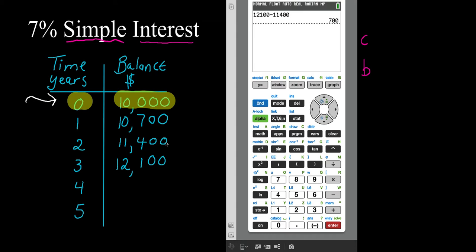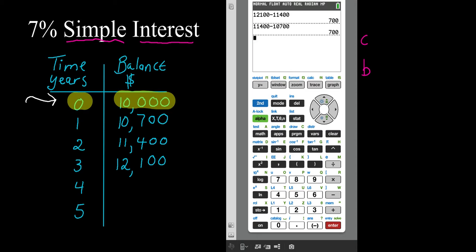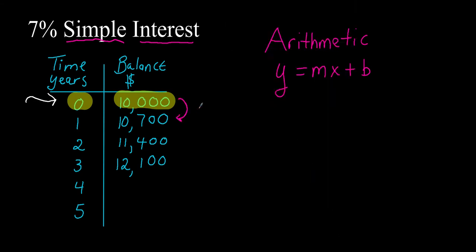I'm going to take eleven thousand four hundred minus the balance right before it, which is ten thousand seven hundred — and I get the same thing, so we have a common difference. You can also take ten thousand seven hundred minus ten thousand and you'll get seven hundred as well. So the account is growing by seven hundred dollars each year — we're adding that common difference of seven hundred. Ten thousand plus seven hundred is ten thousand seven hundred, ten thousand seven hundred plus seven hundred is eleven thousand four hundred, and so on.